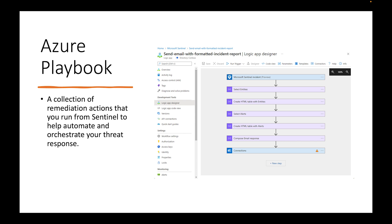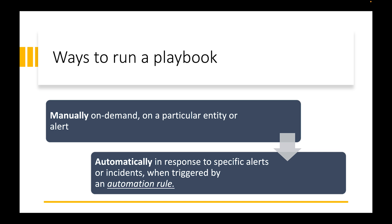So you can keep your environment safe. There are different ways of running a playbook — you can do it manually on demand on a particular entity or alert, or you can have an automatic response to specific alerts or incidents when triggered by an automation rule.